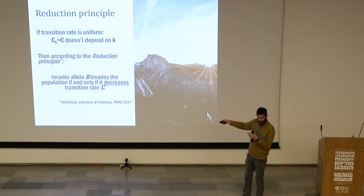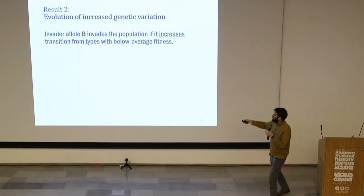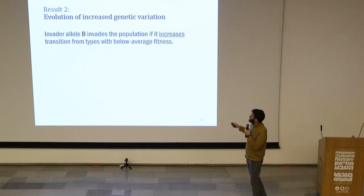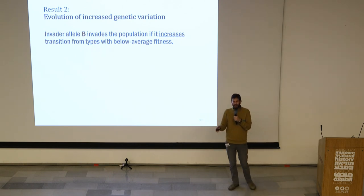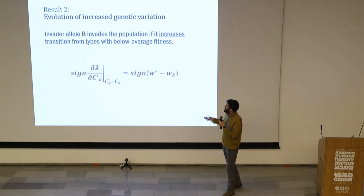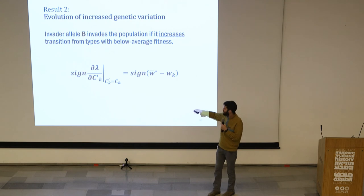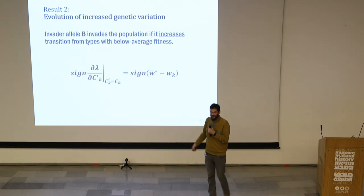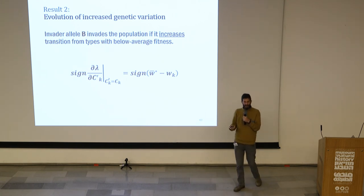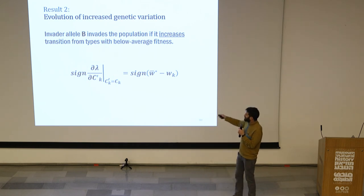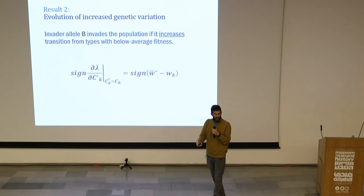In our case, C is not constant and uniform but can depend on the type. The result we call the evolution of increased genetic variation is that big-B can invade the population if it increases transitions specifically from types that are below average. If individuals with below-average fitness — where the right-hand side is positive — increase their transition rate, then lambda will increase, where lambda is the eigenvalue of the Jacobian of the system — a measure of whether big-B successfully invades the population. So if allele B increases transition out of below-average fitness types, it will be able to invade the population.